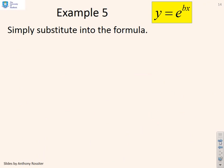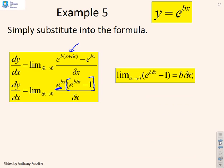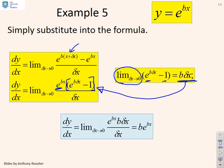Last example: y equals e to the bx. We plug the formula in, getting e to the (bx + b·delta x), take out e to the bx as a common factor, and in the numerator we now have e to the (b·delta x) minus 1. Using the observation that as delta x goes to zero, e to the (b·delta x) minus 1 is simply b·delta x, we substitute that in, cancel the delta x on top and bottom, and the derivative is b·e to the bx.